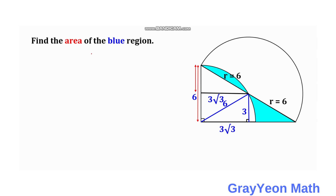For the first part, since the area is a sector of a circle with angle 60 degrees, we use π r² divided by 6. We then subtract the area of the triangle, which is one-half times base 6 times height 3√3.